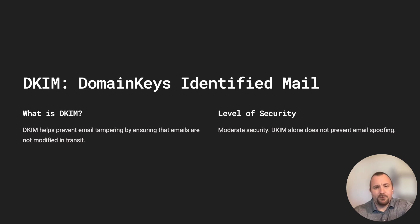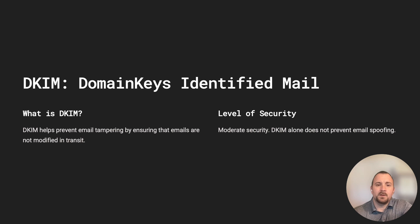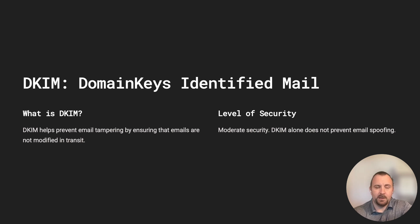The benefits of DKIM: it prevents email forgery by verifying that an email comes from a legitimate domain, reducing the risk of phishing attacks. By authenticating emails, DKIM helps reduce spam and spoofing attacks, improving email delivery rates for legitimate senders. DKIM aligns with industry standards such as RFC 6376, making it a widely accepted authentication mechanism. You can use DKIM to authenticate business emails sent between departments or between partners in B2B communication. Email service providers implement DKIM to ensure that their emails are authenticated and sent through their platforms, improving deliverability while reducing spam complaints.